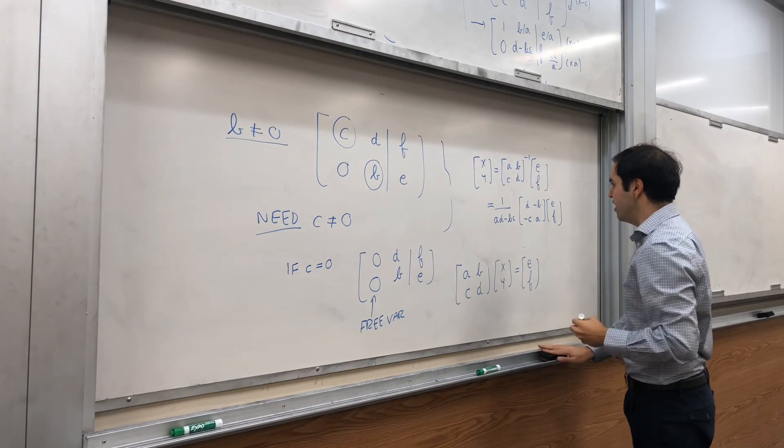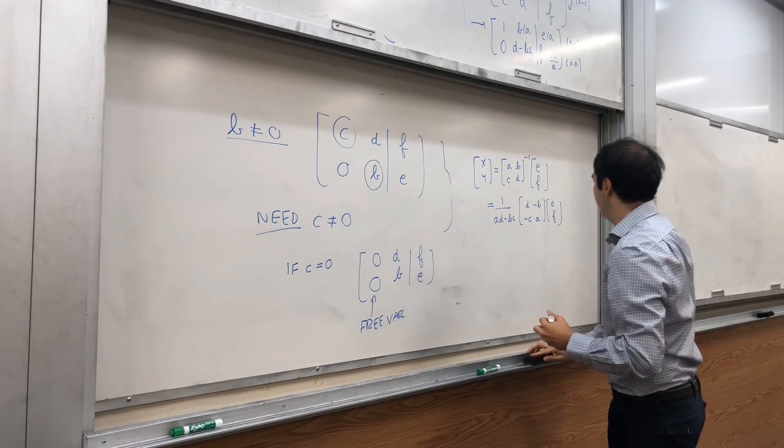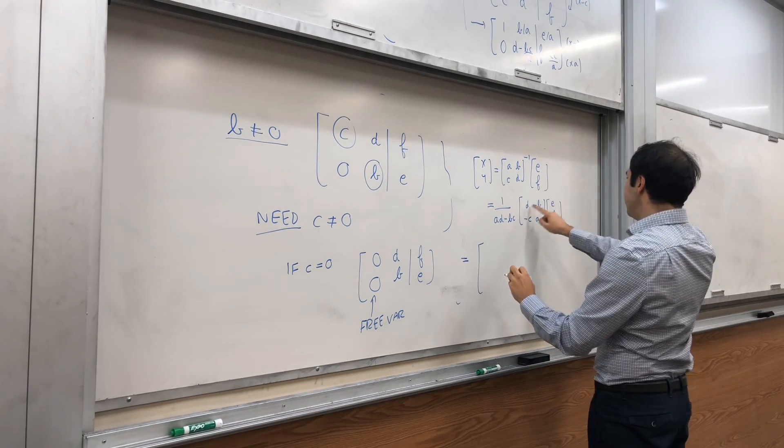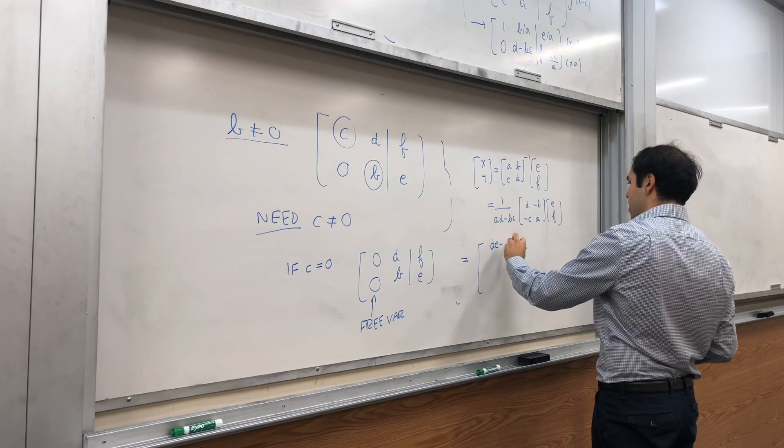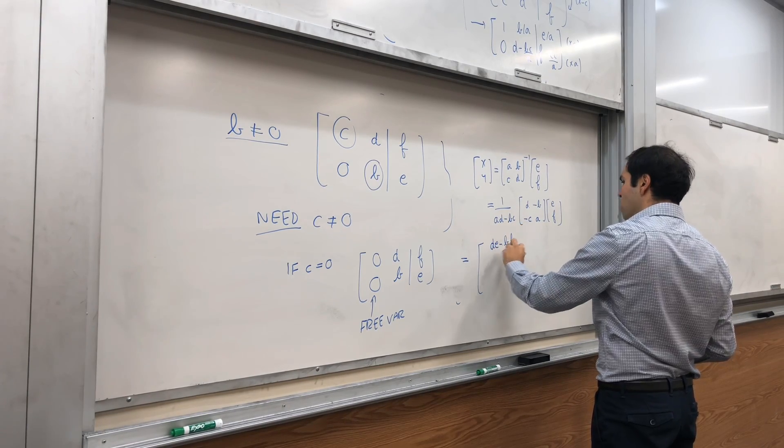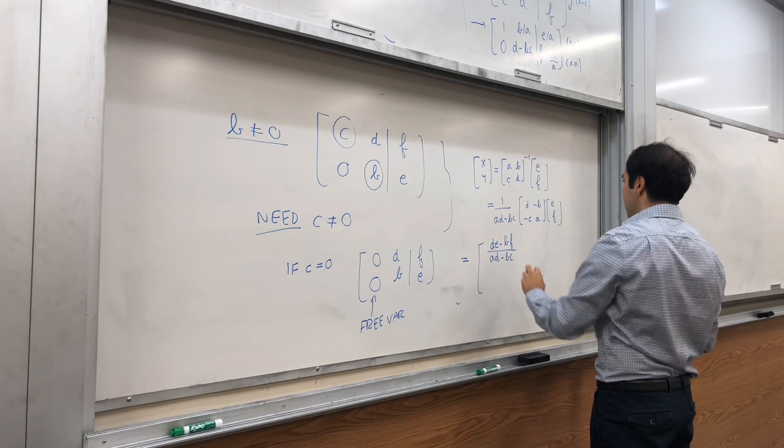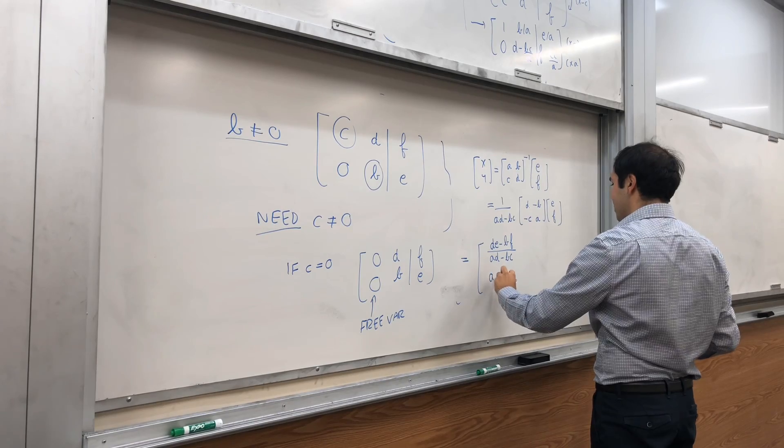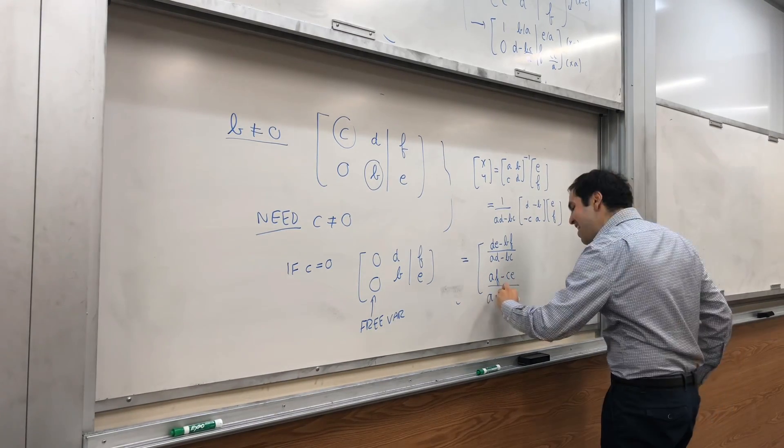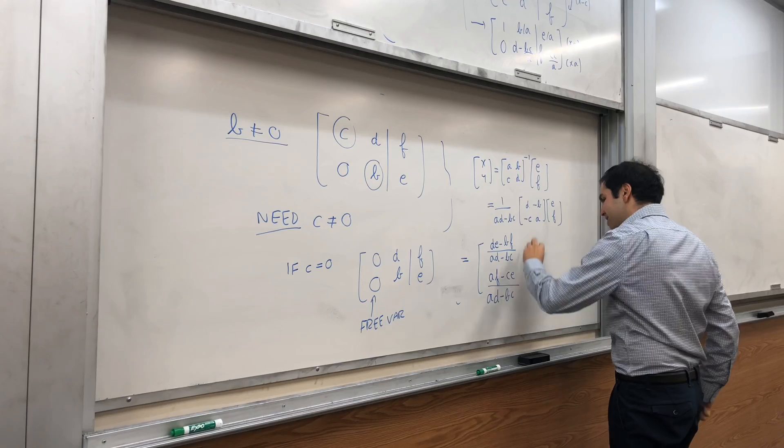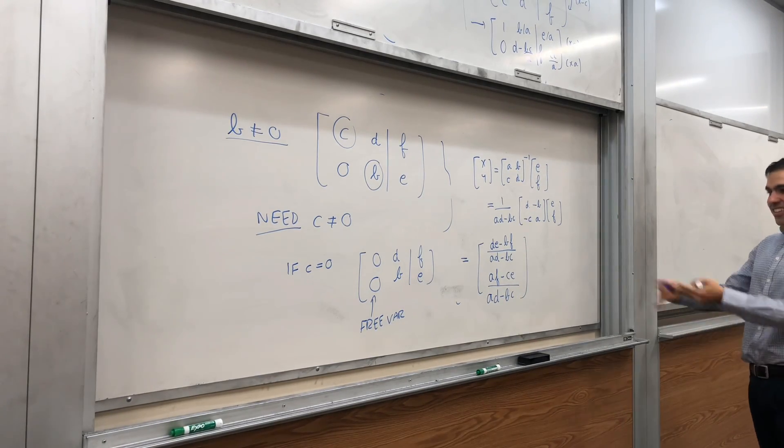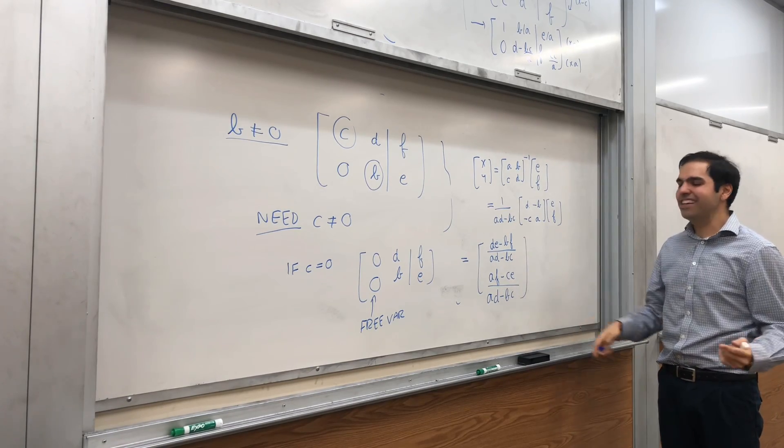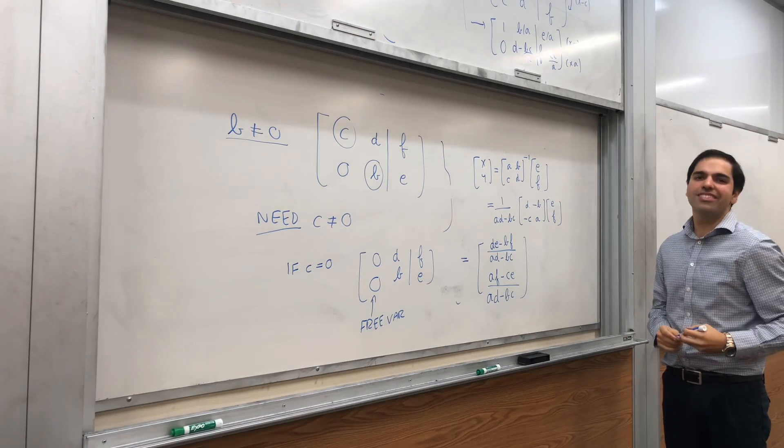And you can calculate that. This then becomes DE minus BF over AD minus BC. And minus, so basically, AF minus CE, and then AD minus BC. So, indeed, nicely, math actually works. If AD minus BC is non-zero, here is your unique solution.